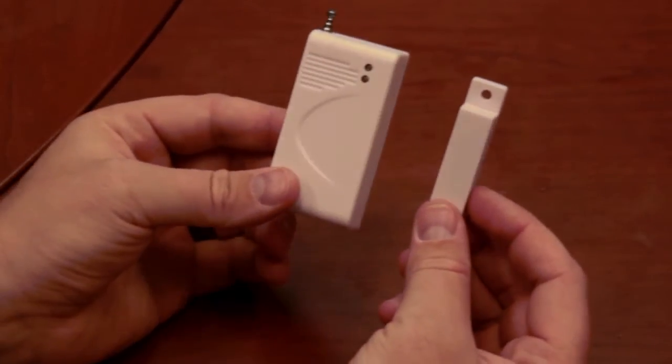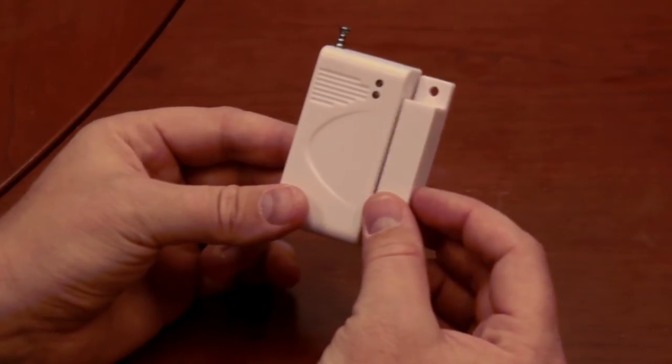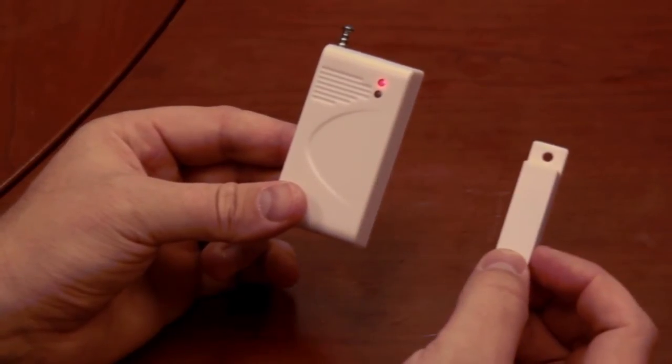When you put it up on your window or door, you want to make sure the magnet is on the side with the two LED lights, so whenever they break apart that light comes on and flashes.